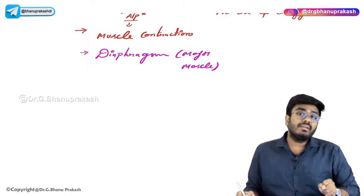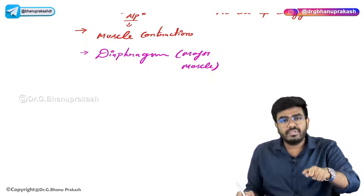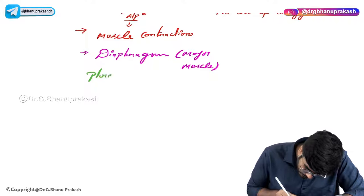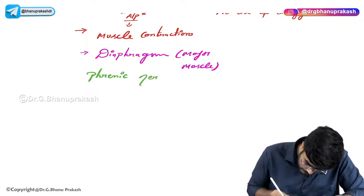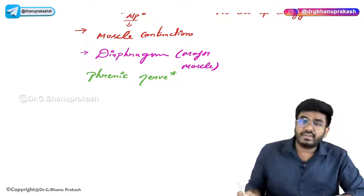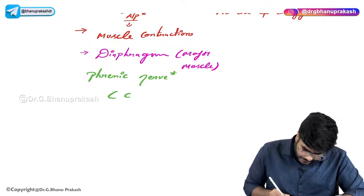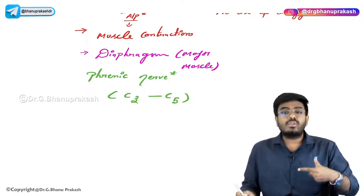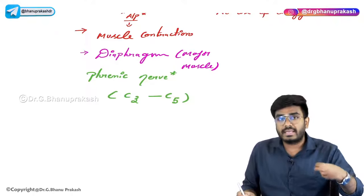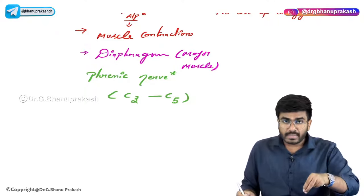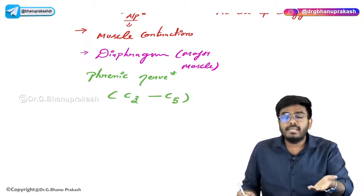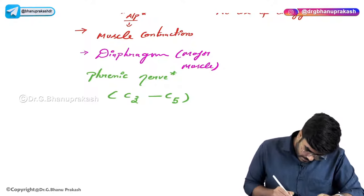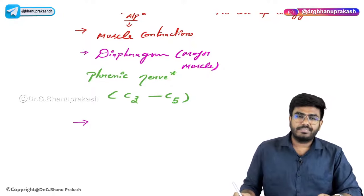The diaphragm is innervated by the phrenic nerve. The root value of the phrenic nerve is C3 to C5 — cervical spinal nerves C3, C4, C5 come down and innervate the diaphragm. When the diaphragm contracts, it helps bring air into the lungs. Apart from the diaphragm, there are other minor muscles that also assist in bringing air into the lungs.